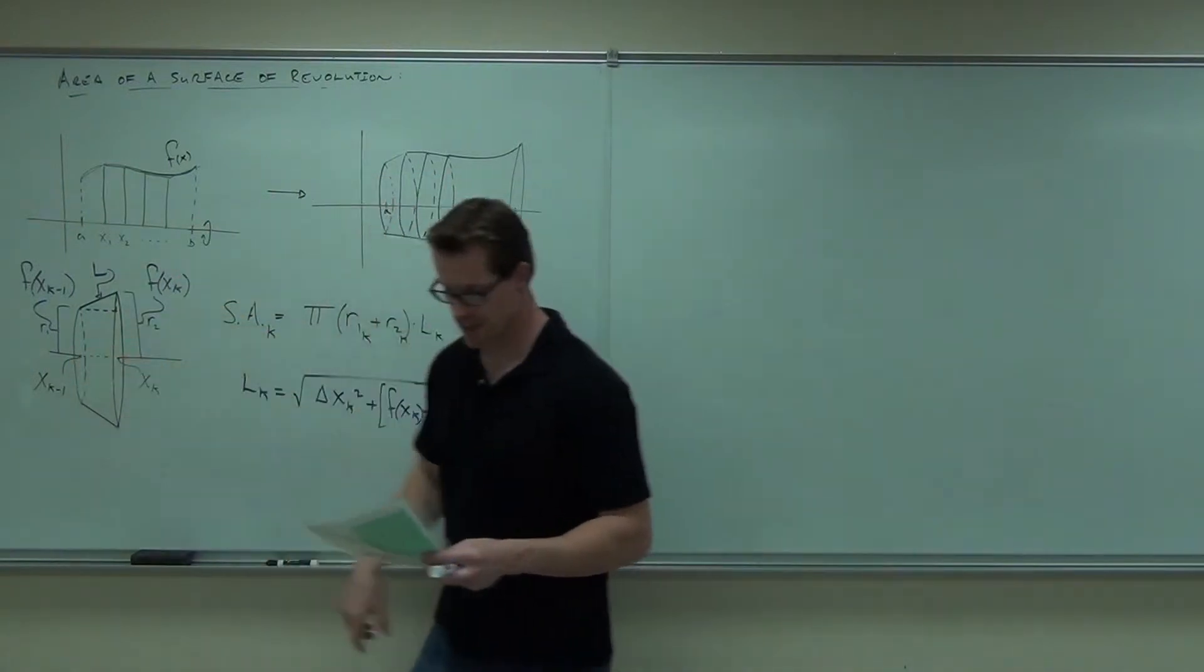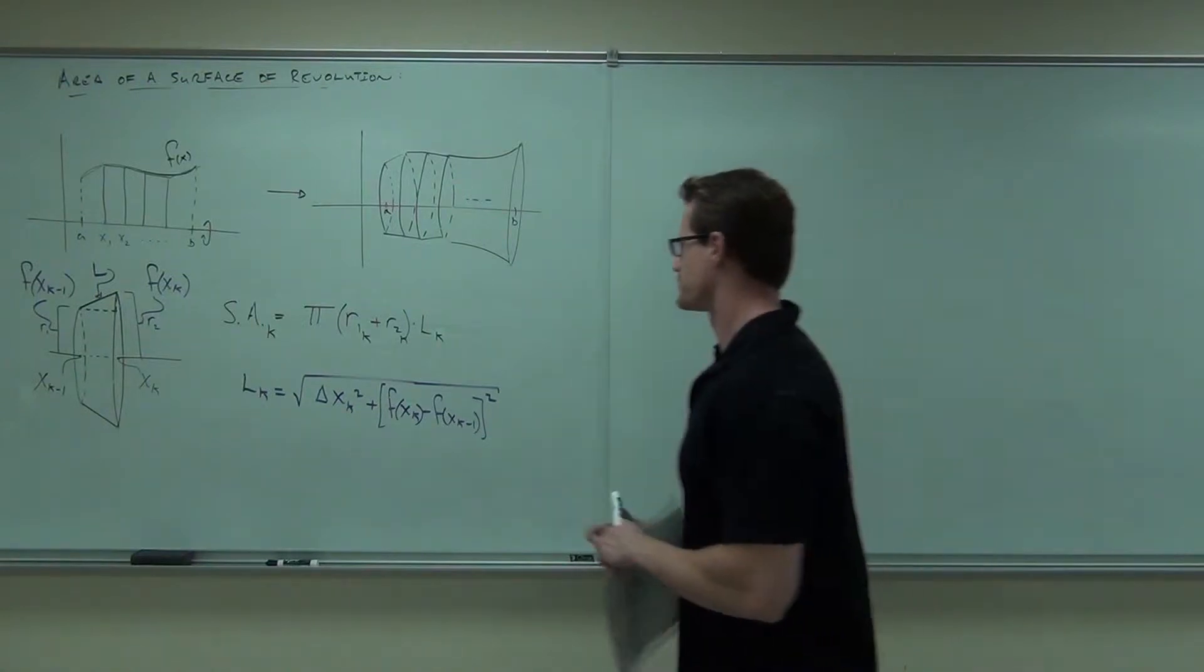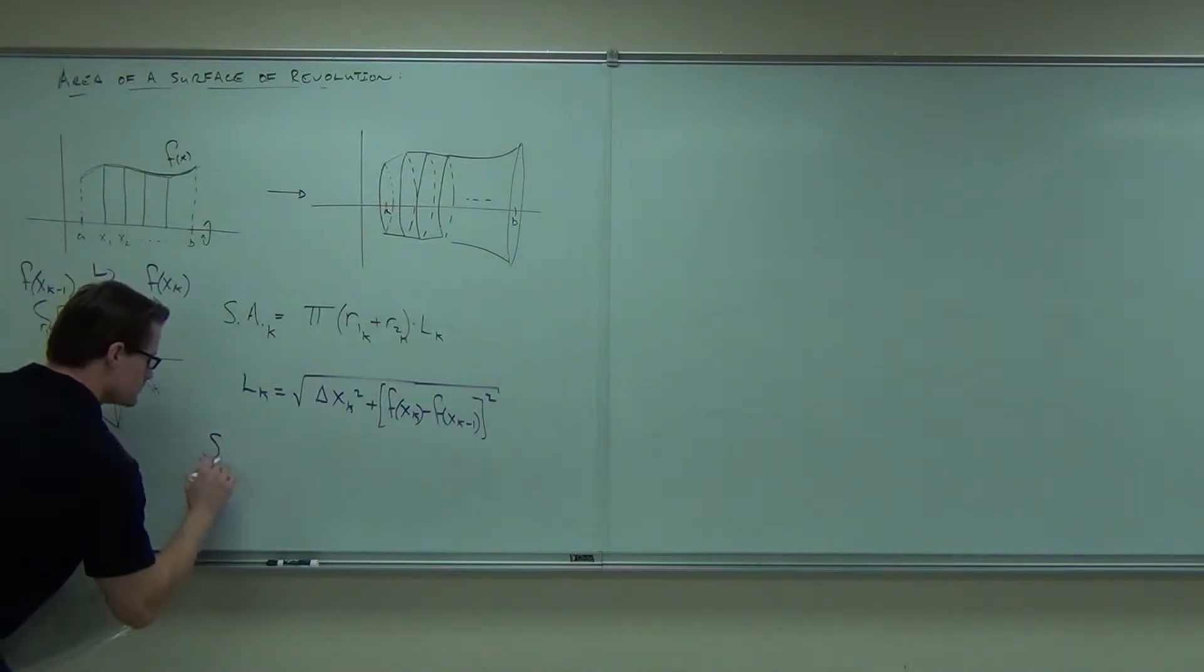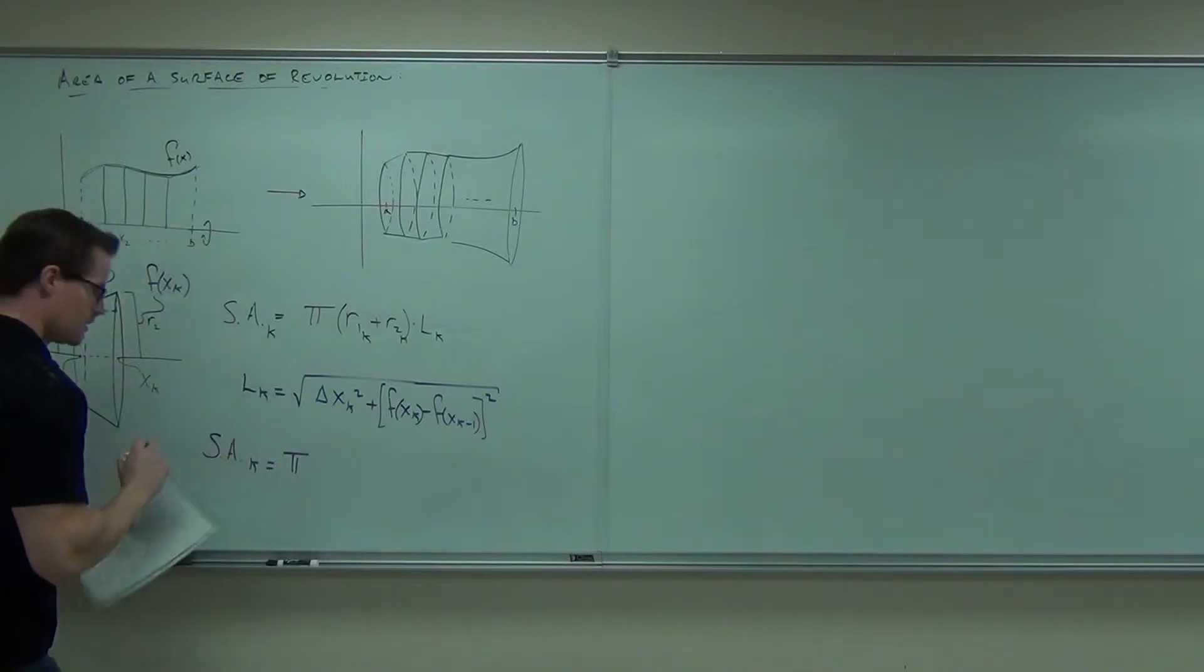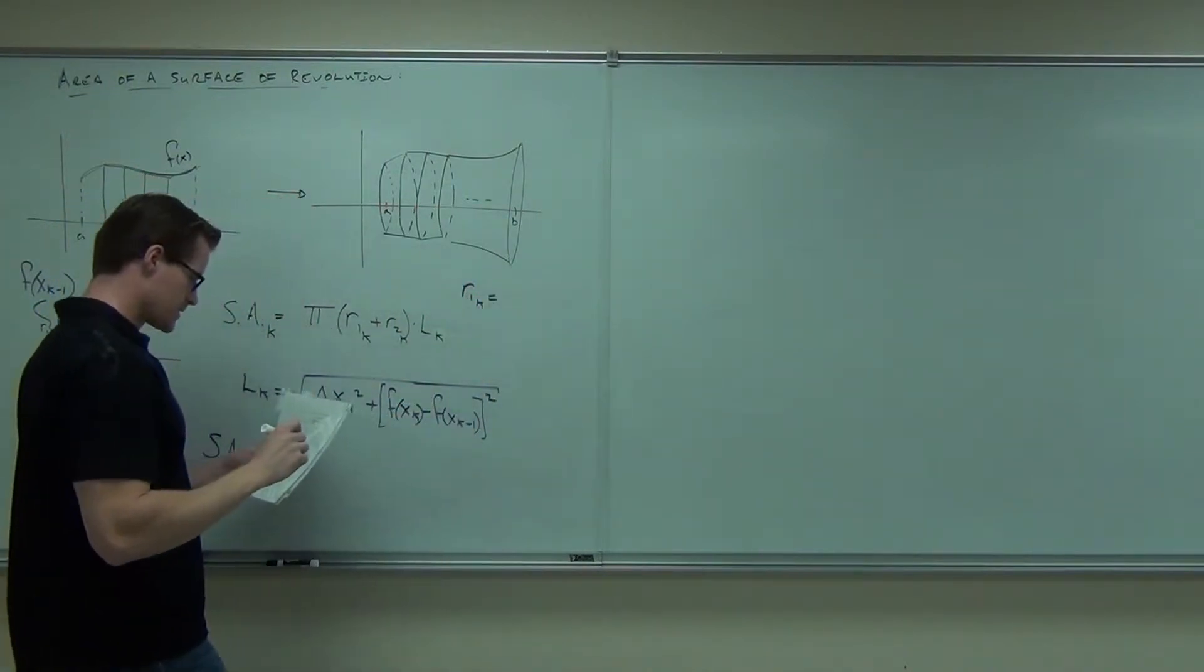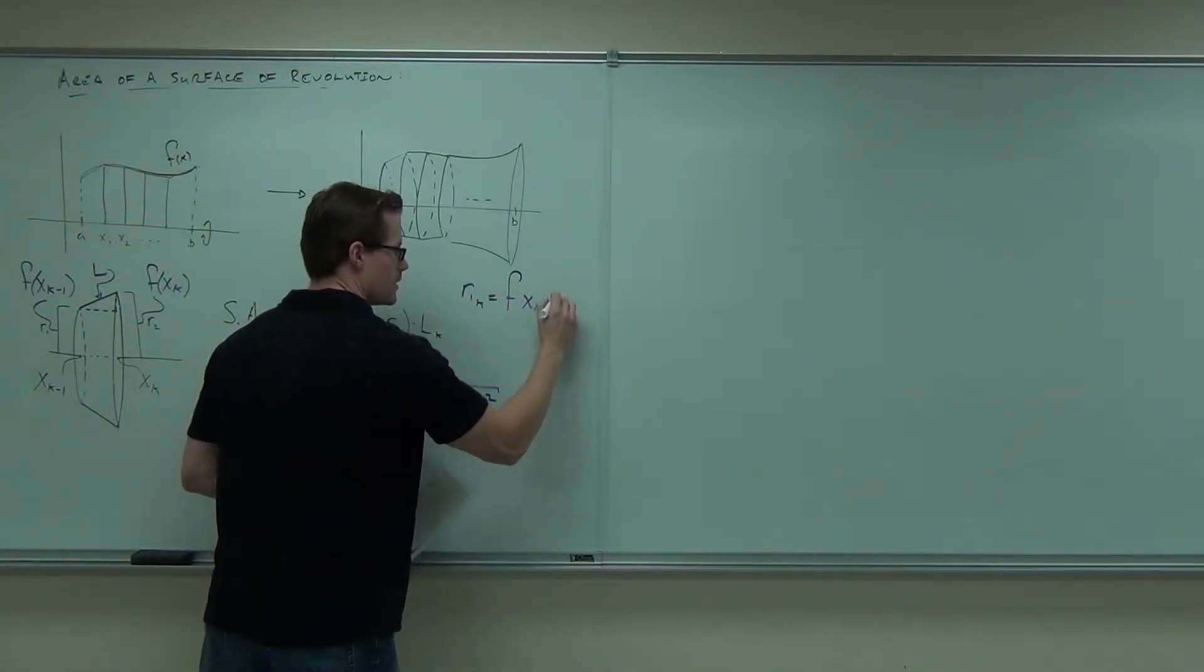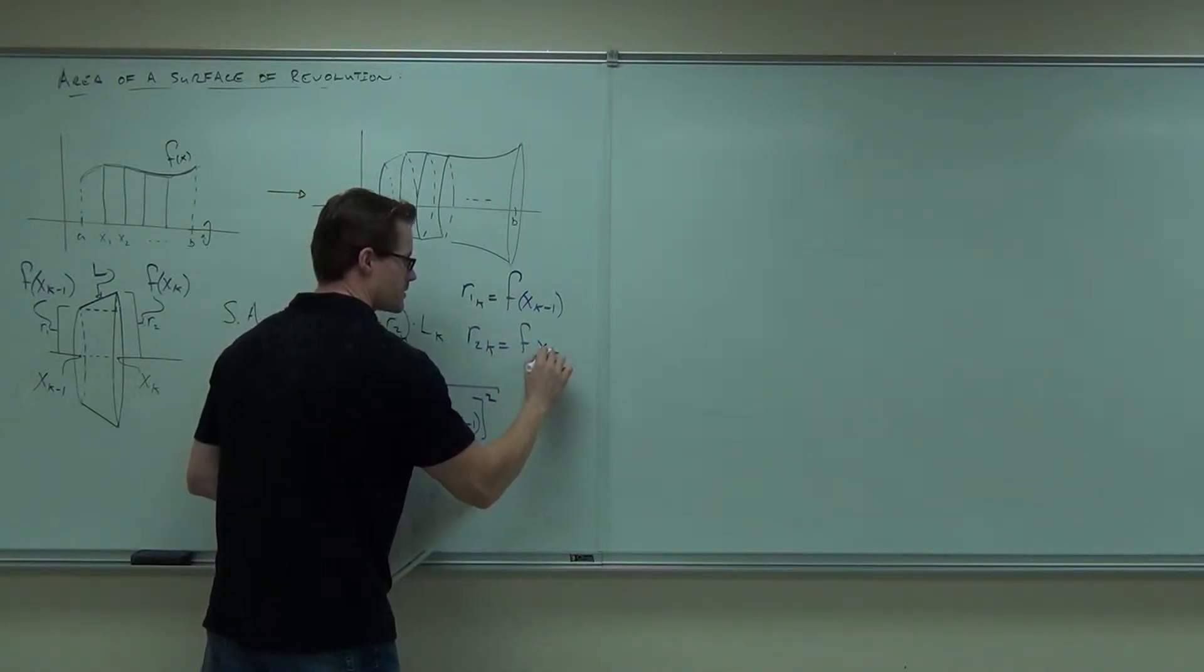The subtraction here is what's giving you delta x. So if we substitute all of this in, we have Pythagorean theorem, r1 sub k is the same thing as that. And r2 sub k is the same thing as that.